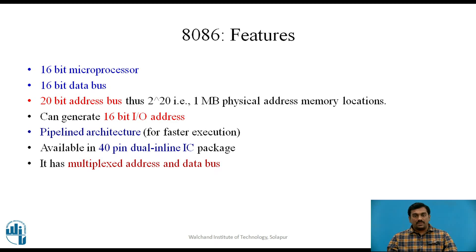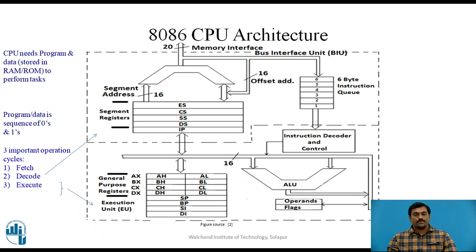By physical address memory we mean random access memory or read only memory. It can generate 16-bit IO addresses, so it can access 2 raised to 16 IO ports. It has pipeline architecture for faster execution of instructions — by pipeline architecture we mean that instruction fetching and instruction execution are done simultaneously, at the same time. It is available in a 40-pin dual inline IC package and has a multiplexed address and data bus, which reduces the number of pins but also reduces the speed of data transfer.